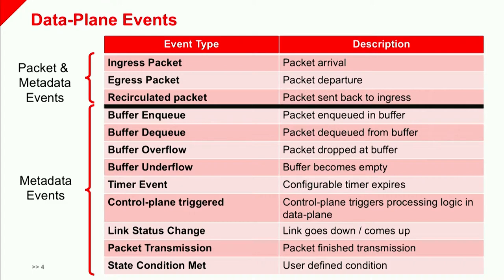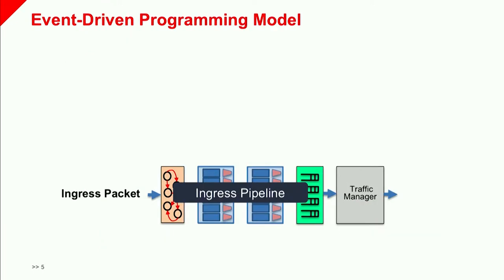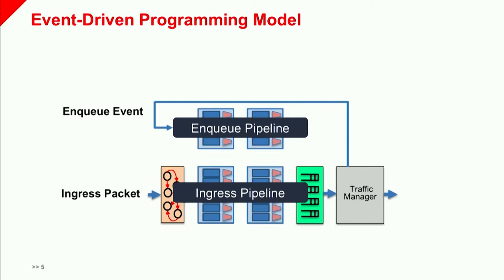Let's see how we can build an event-driven programming model that exposes all these sorts of events. For simplicity, let's build a logical model that supports ingress packet events, enqueue events, and dequeue events. We'll start with something familiar: an ingress pipeline followed by the traffic manager. To add support for enqueue events, we add a separate logical enqueue pipeline. Whenever a packet gets enqueued into the traffic manager's buffer, it extracts some metadata and fires an enqueue event, triggering processing in that pipeline.